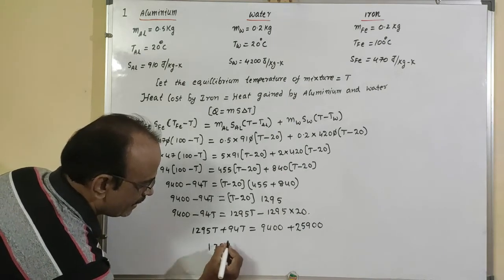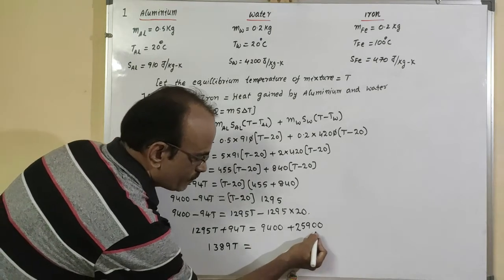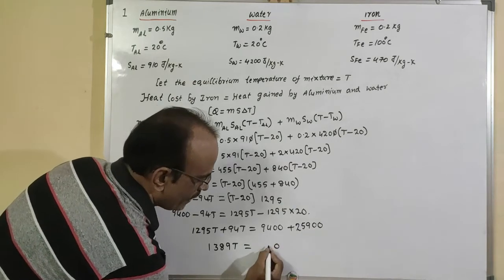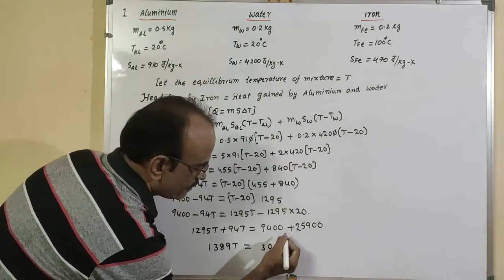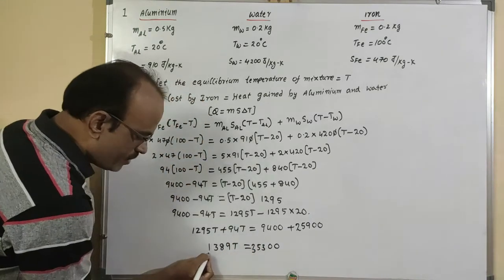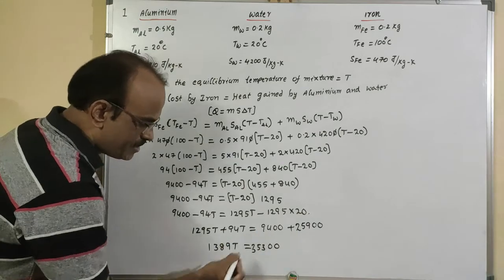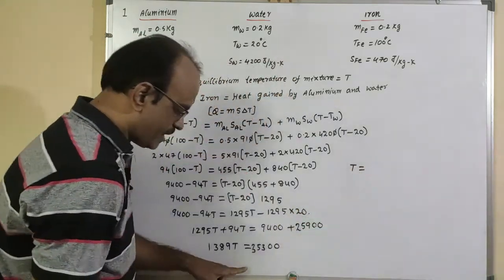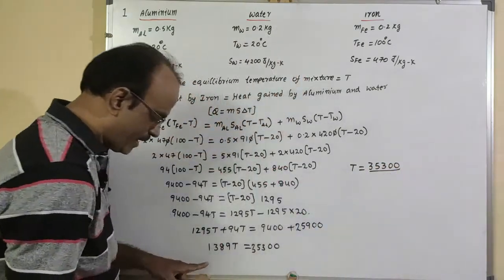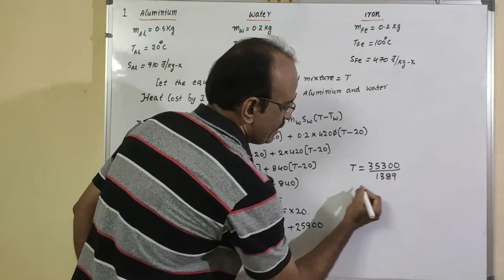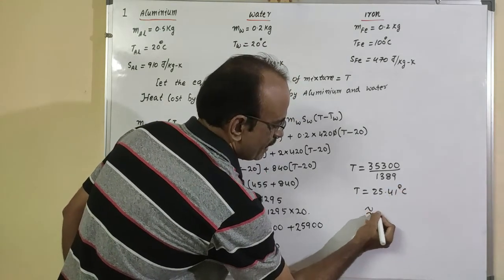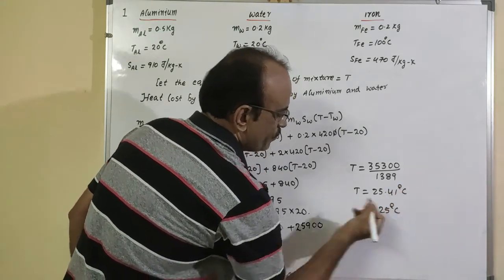Collecting all T terms on one side: 1295T + 94T = 9400 + 25900, giving 1389T = 35300. Therefore, the resultant temperature T = 35300 ÷ 1389 ≈ 25.41 degrees centigrade, or approximately 25 degrees centigrade.